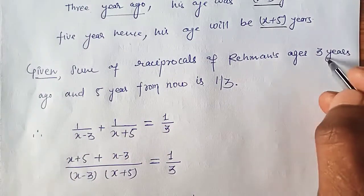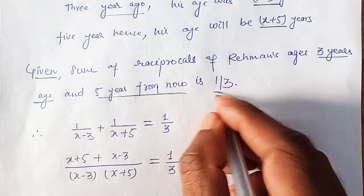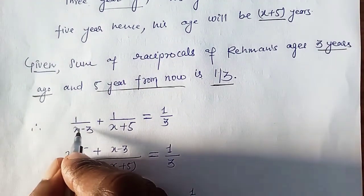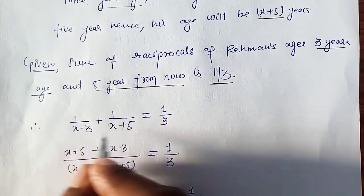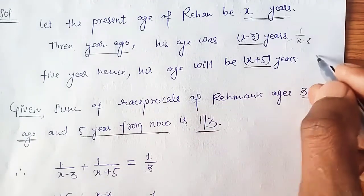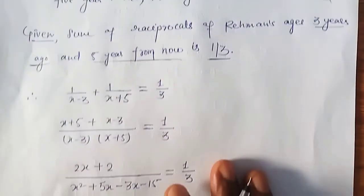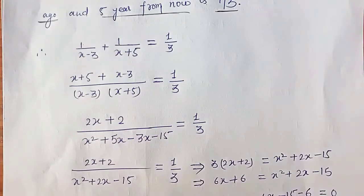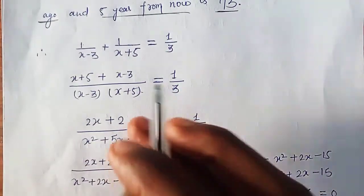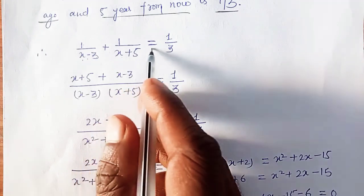According to the question, the sum of reciprocals of Rehman's age three years ago and five years later equals one upon three. So: 1/(x−3) + 1/(x+5) = 1/3.